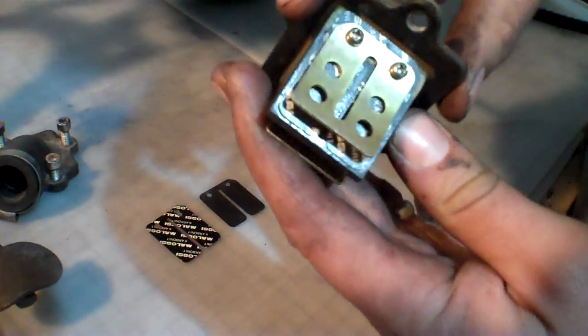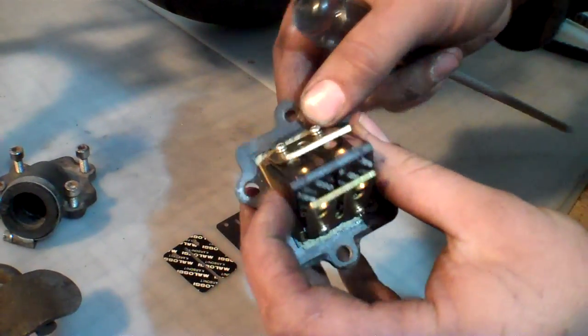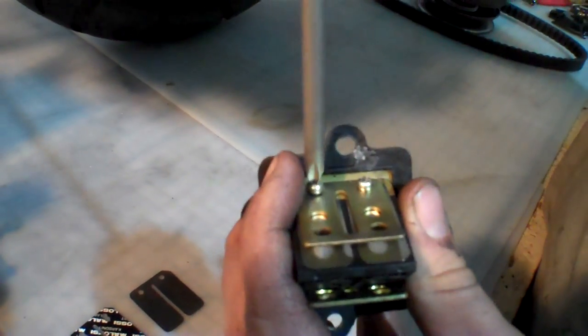See, this is what a stock one looks like as it's bolted in here. We're going to flip around and this is the stock part. So we're going to go ahead and unscrew the reed cage here.